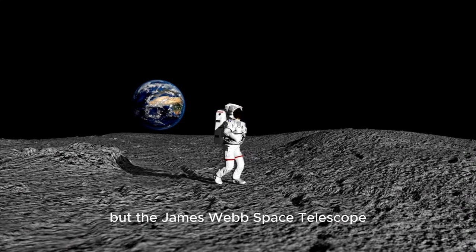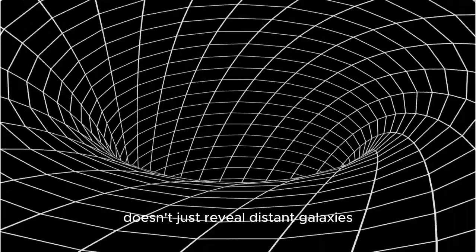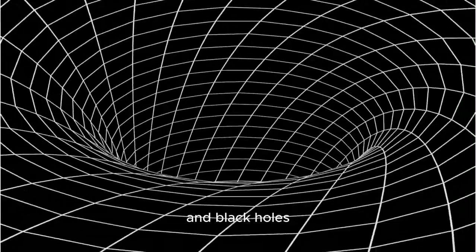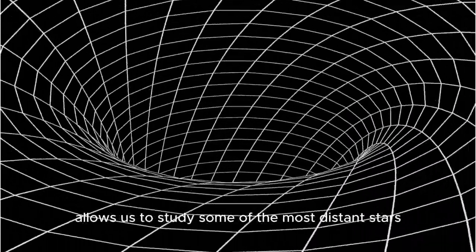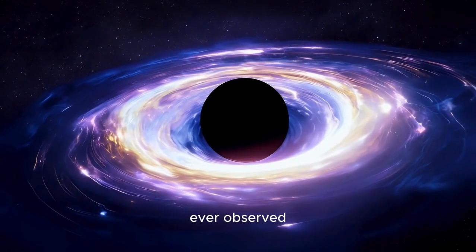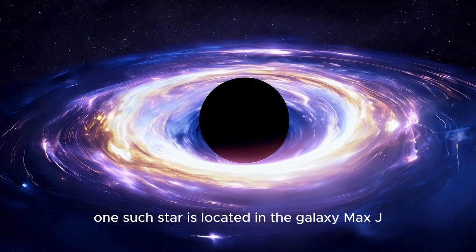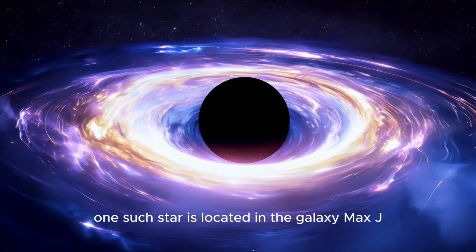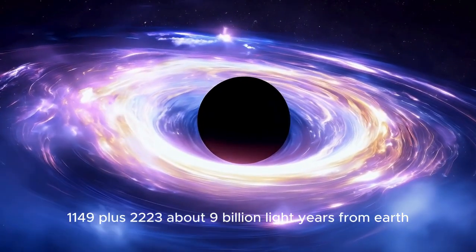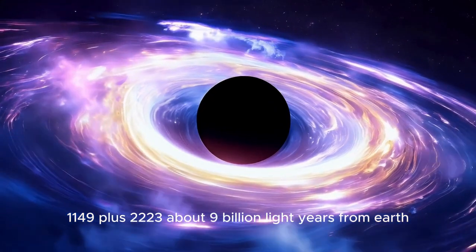But the James Webb Space Telescope doesn't just reveal distant galaxies and black holes. It also allows us to study some of the most distant stars ever observed. One such star is located in the galaxy MAX J1149 plus 2223, about 9 billion light-years from Earth.